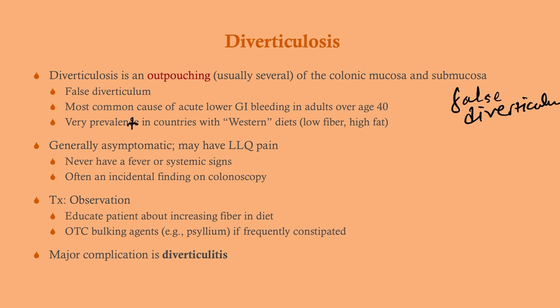Diverticulosis is very prevalent in countries with western diets — low fiber, high fat, processed foods that strip away fiber. This causes a decrease in stooling, straining, and increased intraluminal pressure, which is the pathophysiology behind it. Interestingly, a gastroenterologist colleague from India noted he rarely sees this there, but sees it all the time in the US, consistent with the dietary association.